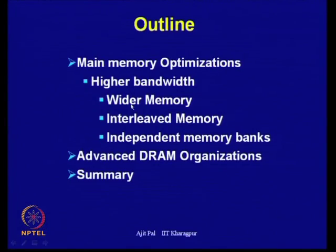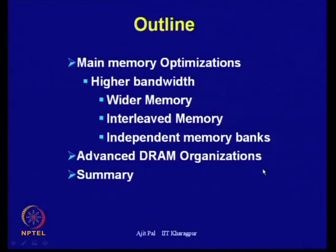Higher bandwidth means increasing the rate at which data is transferred, and this can be achieved in three different ways: the use of wider memory, the use of interleaved memory, and the use of independent memory banks. These are the three commonly used techniques for increasing the bandwidth of main memory systems. After that, we shall discuss advanced dynamic RAM organizations — the many innovations that have taken place to improve DRAM organization to make it faster.